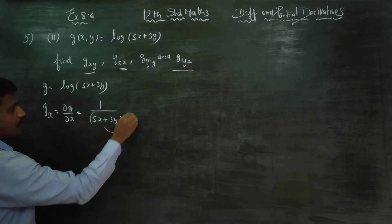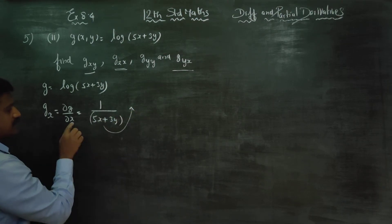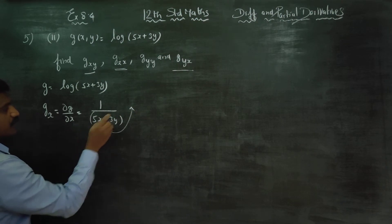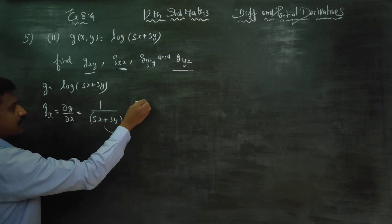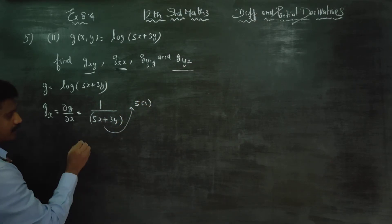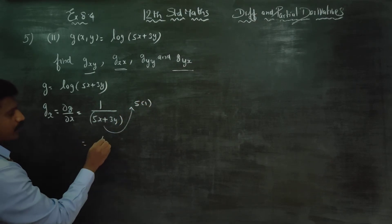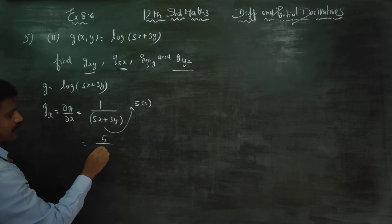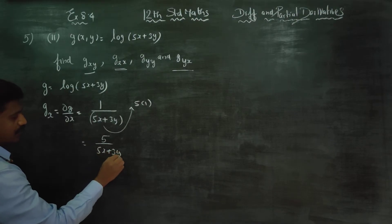Again, chain rule. Differentiate x part: in 5x, the derivative is 5, and the constant term gives 1. So the answer is 5 by (5x plus 3y).